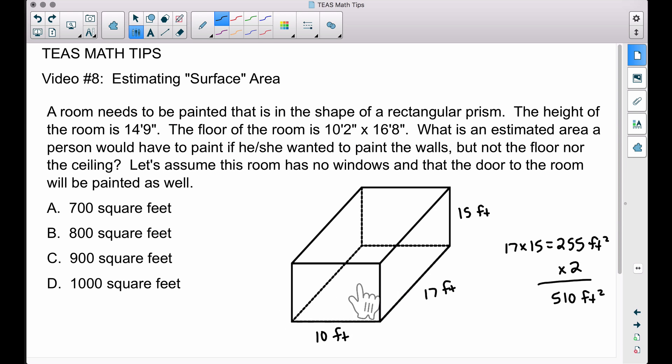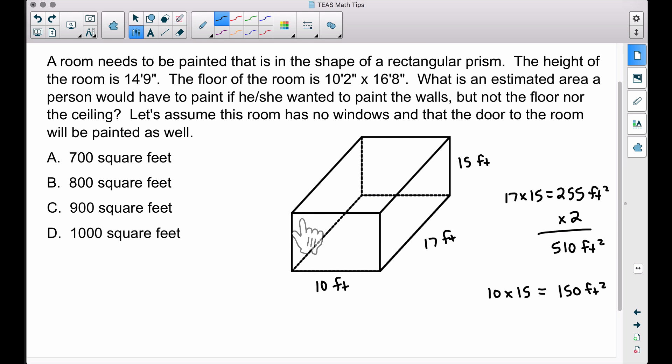We have two more walls, the front wall and the back wall. We're assuming no windows, so we're painting all four walls and the door as well. We have 10 feet by 15 feet. Remember the height is 15 feet. The area of this wall is 150 square feet. Since we want to paint the back wall as well, let's double it, giving us 300 square feet.